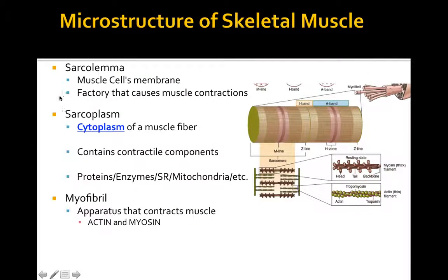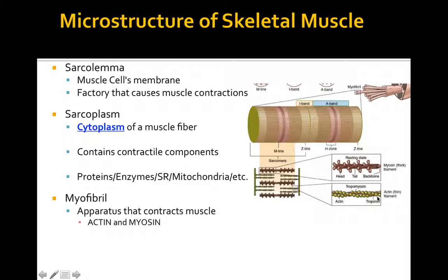In the sarcomere you have the M-line with actin and myosin. The myosin cross bridges—also called globular heads—look like little golf club heads and attach to the double-helix bead-like structure of the actin. Surrounding each actin-myosin unit is a gel-like substance called the sarcoplasm—the cytoplasm of the muscle fiber—which contains all the contractile components: ions, protons, enzymes, and the sarcoplasmic reticulum.